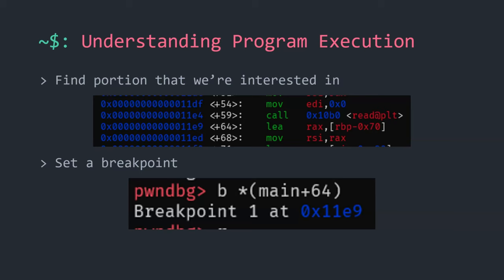There's a question about the offset numbers like 'main+54', 'main+59'. Each assembly instruction has a varying size and the numbers represent the offset from the start of the function. That's why the spacing between offsets is different — for example, instructions at +54, +59, +64 are five bytes apart, but +68 is only four bytes from +64 because the size of that particular instruction is different.